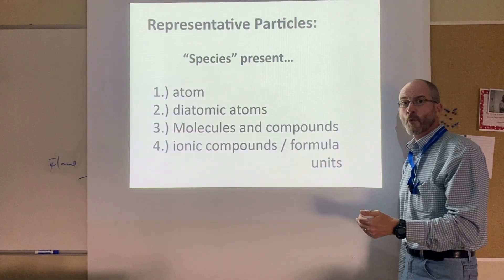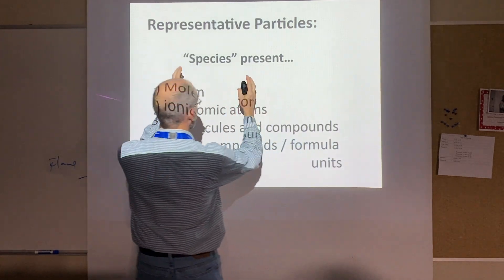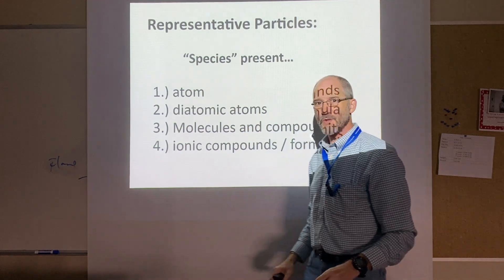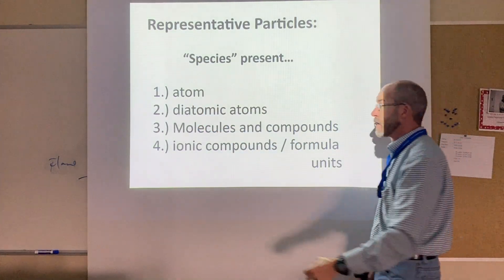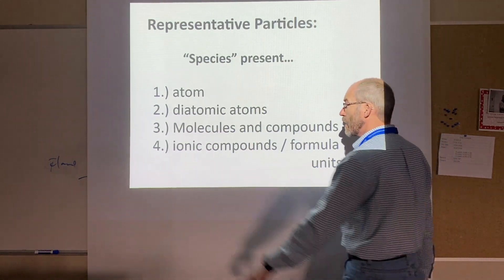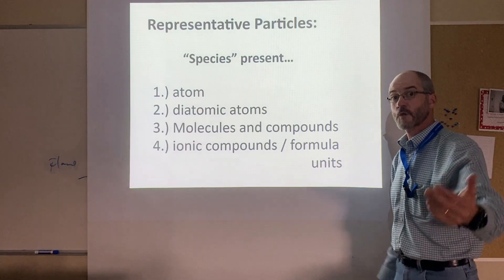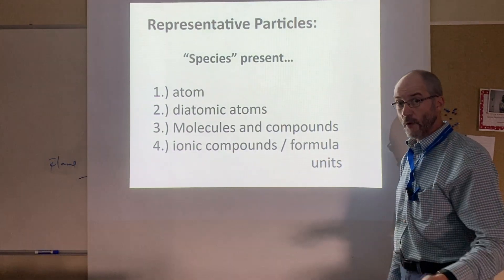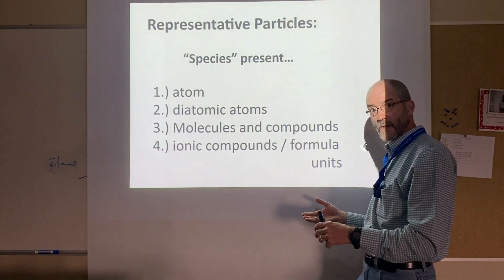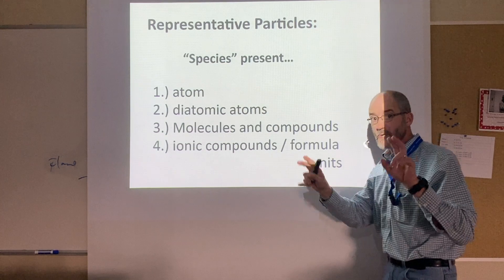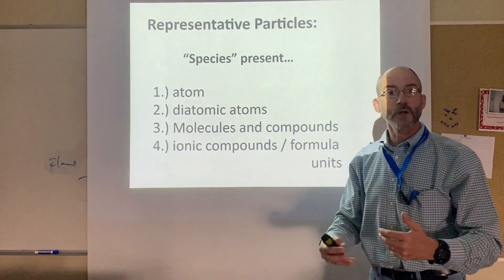So what are some representative particles in chemistry — in other words, what are the different species? What if I had a single atom, or diatomic atoms where two atoms of the same type are bonded together? What if I had a molecule, or a compound like H₂O, or an ionic compound like NaCl — which has a formula unit rather than a molecular formula? These are different species. If I want to know how many I have, I use the unit called the mole.